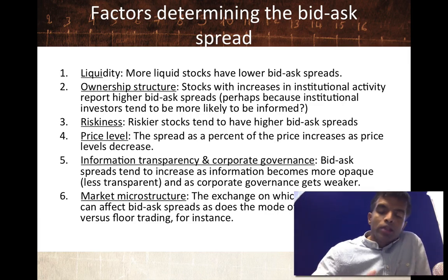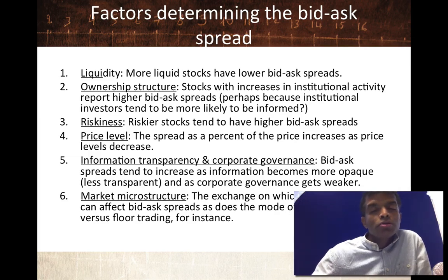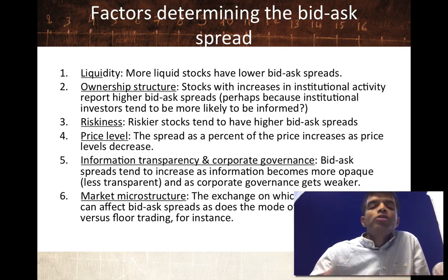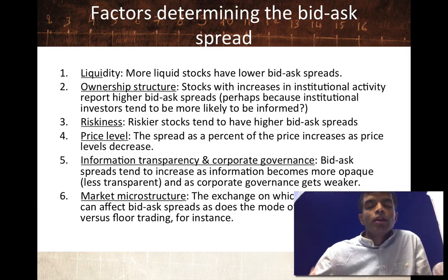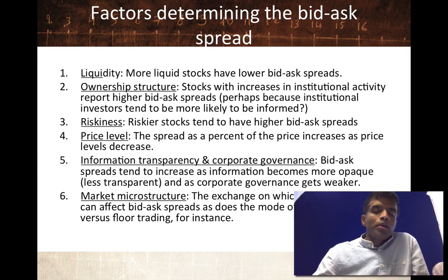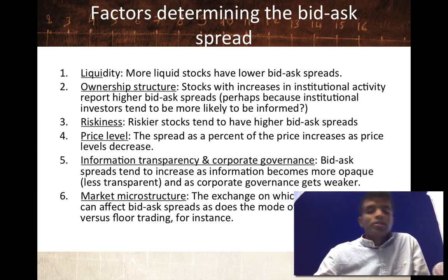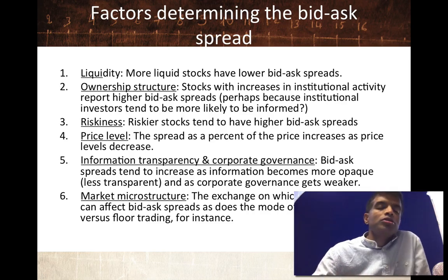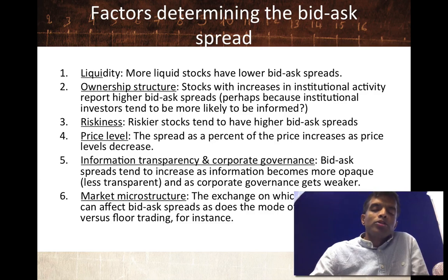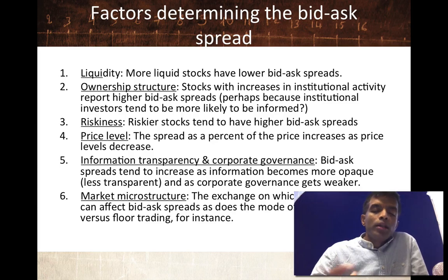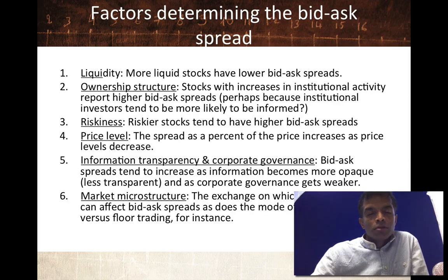The spreads also tend to vary depending on who owns the stock. Stocks with a lot of institutional activity — if you see a surge in institutional activity — tend to see an increase in bid-ask spreads. Perhaps the dealer looks at those institutions trading with him and says they must know something I don't. Third, riskier stocks seem to have higher bid-ask spreads than safer stocks, perhaps because the stock price can move a lot more and put the dealer at risk.